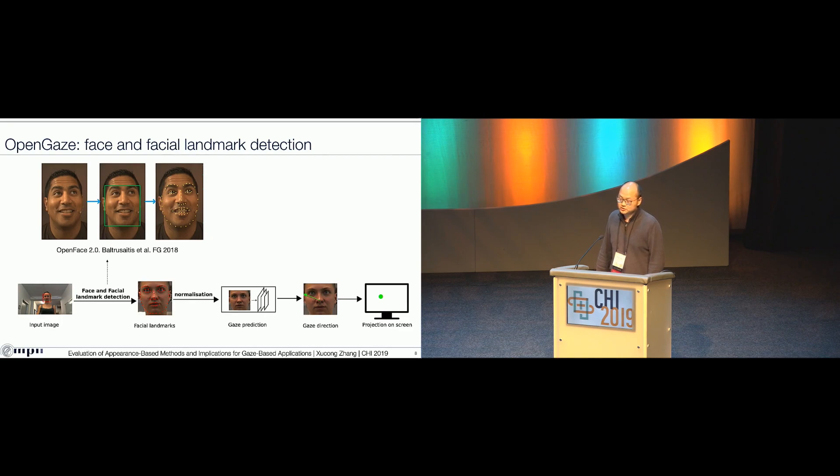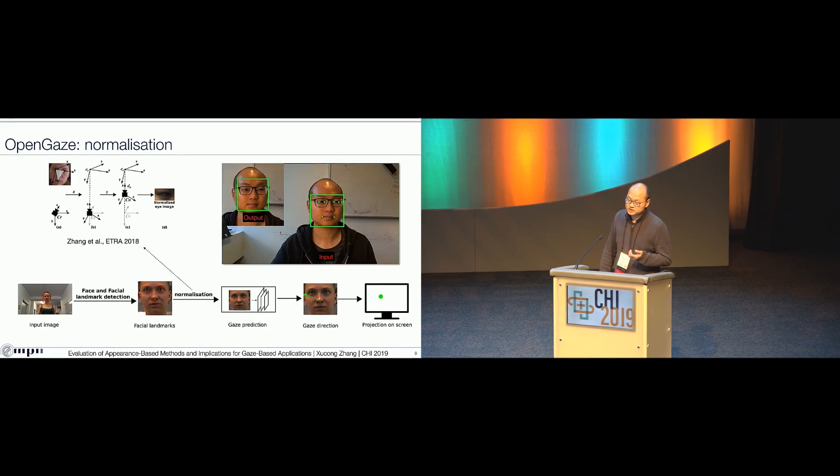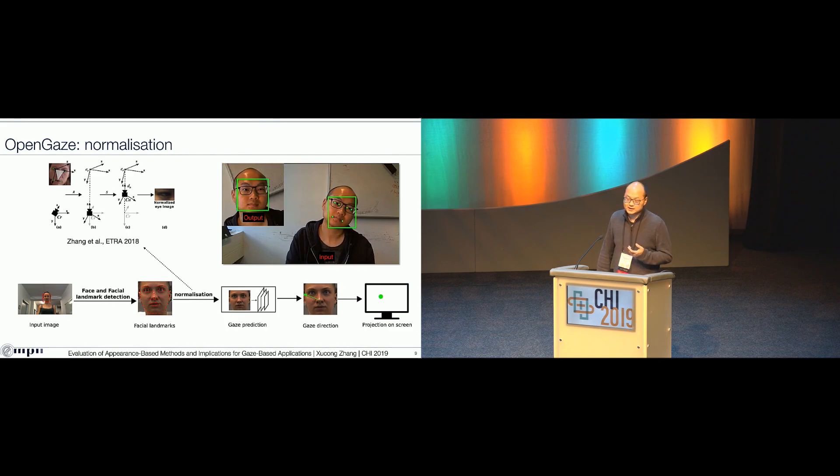With the detected facial landmarks, we then perform data normalization. This is one of our previous works. Essentially, it puts a virtual camera at a fixed distance to the face center and also rotates the virtual camera so that it can cancel some degree of the head rotation. Really to say, it can cancel the head rotation around the roll axis and also it outputs a fixed size of face image regardless of the distance between the user and the camera, so that we can have a robust face image with fixed size.